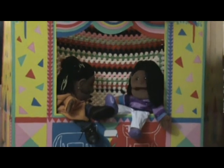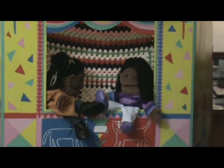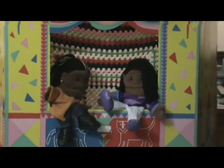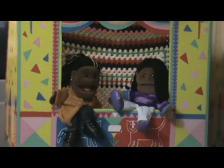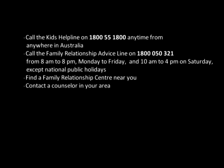Who can help if I have trouble with bullying online or at school? To get help, you can call the Kids' Helpline on 1800 551 800 anytime from anywhere in Australia. You can also call the Family Relationship Advice Line on 1800 050 321 from 8am to 8pm Monday to Friday and 10am to 4pm on Saturday, except national public holidays. Find a family relationship centre near you, or contact a counsellor in your area.